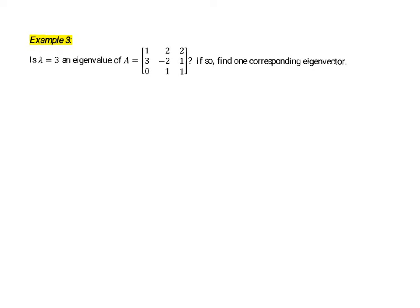In this example we're asked to determine whether three is an eigenvalue of a given matrix. Verifying an eigenvalue is substantially more difficult than verifying whether something is an eigenvector. If you're given a vector and asked if it's an eigenvector, all you need to do is multiply the vector by the matrix and see if you get a scalar multiple. The relationship we're looking for is Ax equals lambda times x, where x is an eigenvector and lambda is the eigenvalue.